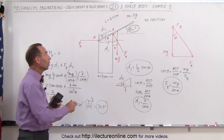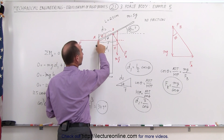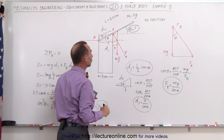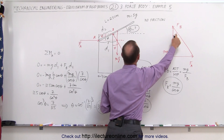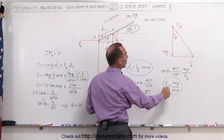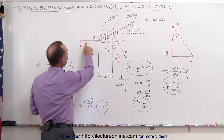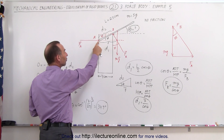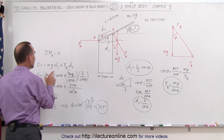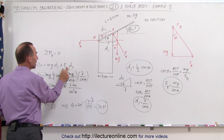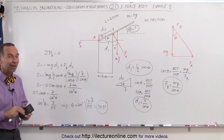So again, the idea is: we have a three-force body. We identify the three forces. Since there's no friction, force A must be perpendicular to the surface of the glass and force B must be perpendicular to the edge of the rod, and then we have Mg straight down. We draw a triangle and recognize that angle theta is the same throughout, giving us a relationship between Fb and Mg. We then solve by summing moments about point A to zero, which eliminates Fa, and find the relationship between Fb, D1, and D2 in terms of theta. The rest is just math.